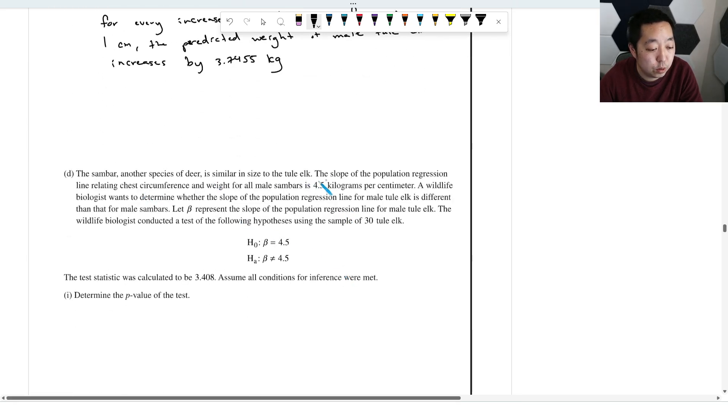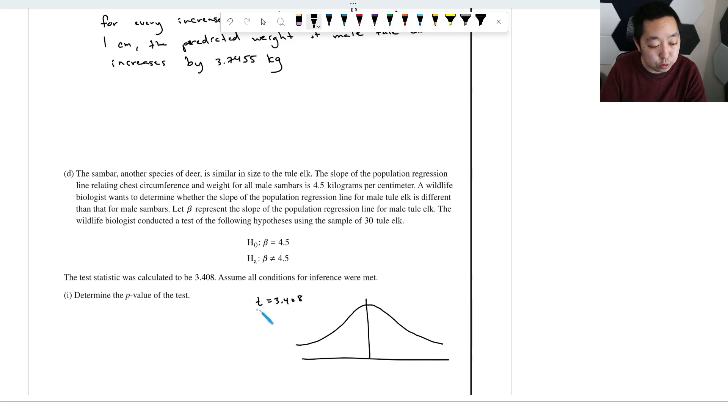The sandbar and other species of deer are similar size to the tule elk. The slope of the population regression line is 4.5 kilograms per centimeter. Wildlife biologist wants to determine whether the slope of the population regression line is different than that for male sandbars. Let beta represent the slope of the population regression line for a male tule elk. The wildlife biologist conducts a test of the following hypothesis using a sample of 30 elk. Beta equals 4.5 and the test statistic was calculated to be 3.408. Now this is what we do. Assume all conditions for inference were met. Determine the p value. So remember this is a normal curve. And we want not equal to, so our t statistic is kind of like this x variable in our t distribution, 3.408. Now this is a t distribution and we want the tail areas here.